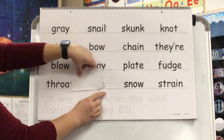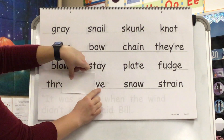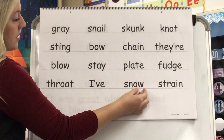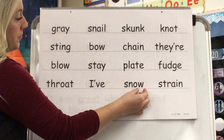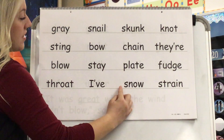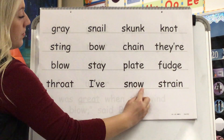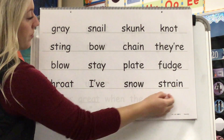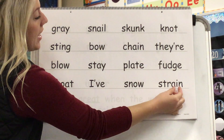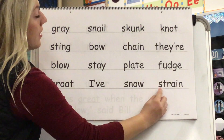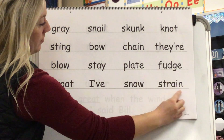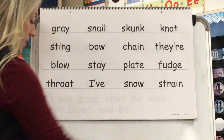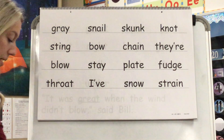Sound? I. Contraction? I-v. Sound? O. Blend? S-n-o. Word? Snow. Sound? A. Blend? Strain. Word? Strain. Great job.